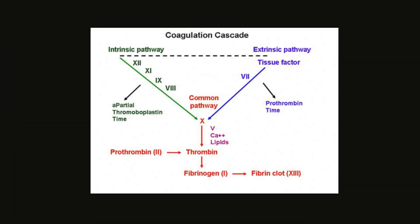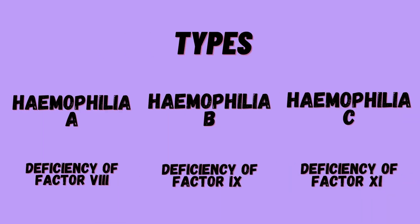To understand hemophilia, let us recapitulate the coagulation cascade. There are two pathways: the intrinsic pathway and the extrinsic pathway. In the various hemophilic disorders, factors of the intrinsic pathway are deficient. The marker of this deficiency is the activated partial thromboplastin time, that is APTT — hence APTT value is elevated in hemophilic disorders.